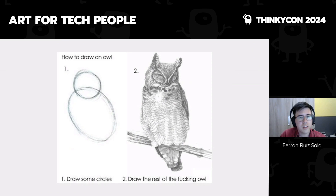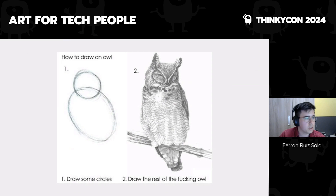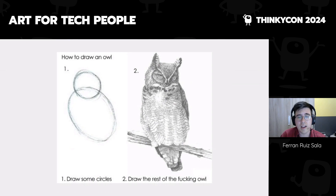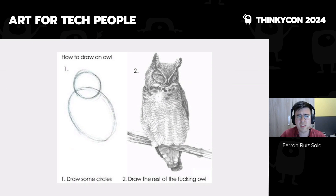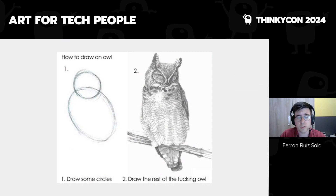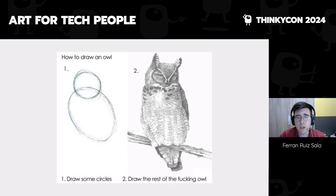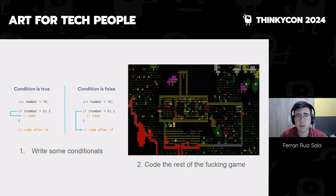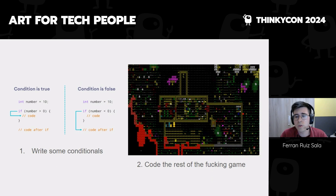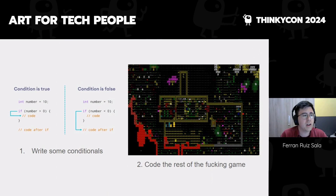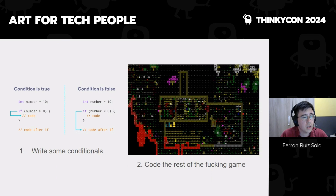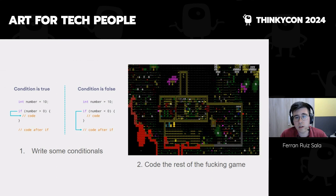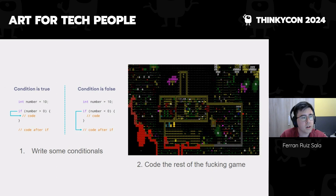A lot of art tutorials feel like the 'How to Draw an Owl' meme: step one, draw some circles; step two, draw the rest of the owl. There are a lot of choices, technique, and ideas just lost in the sauce. Most tutorials are about how to make a specific thing, which isn't the most useful. It's very frustrating to follow recipes — it's basically like telling someone learning programming: step one, write some conditionals; step two, code the rest of the game.